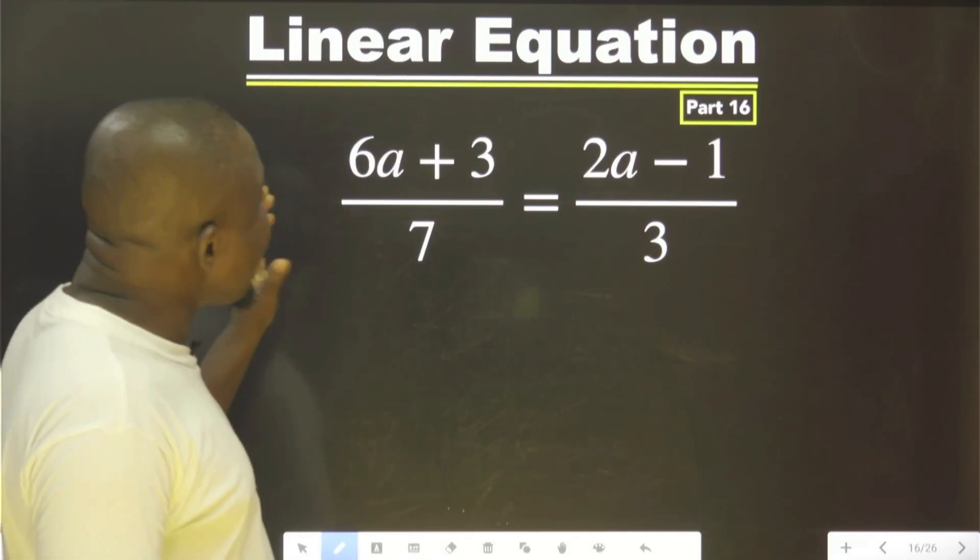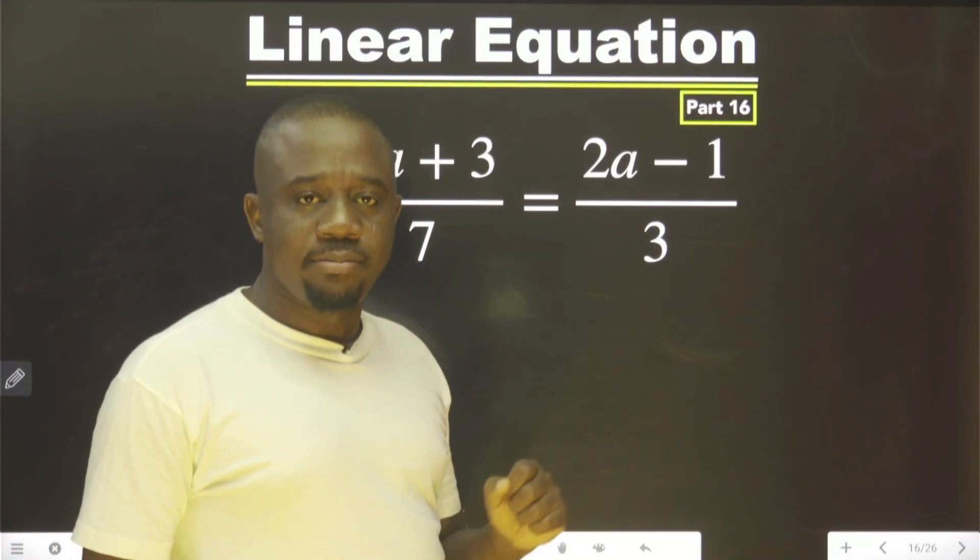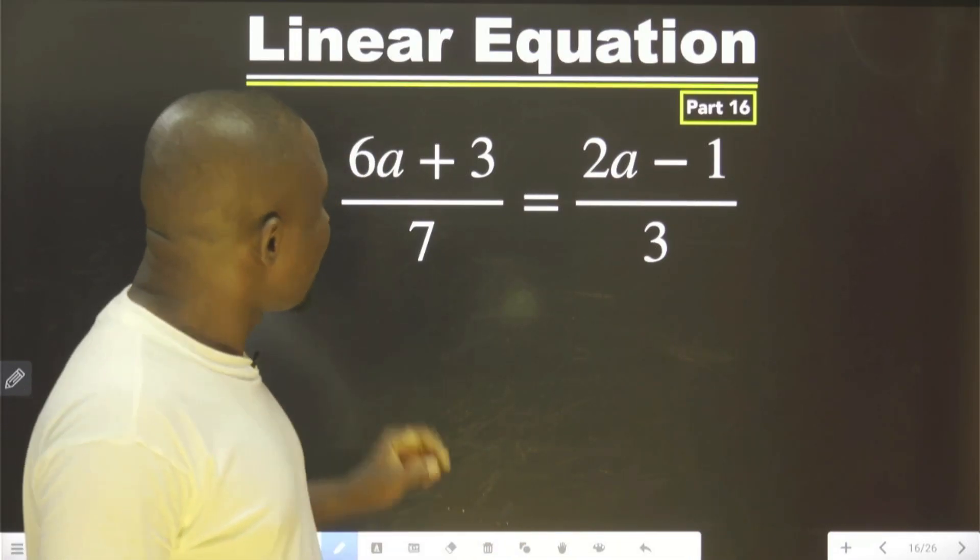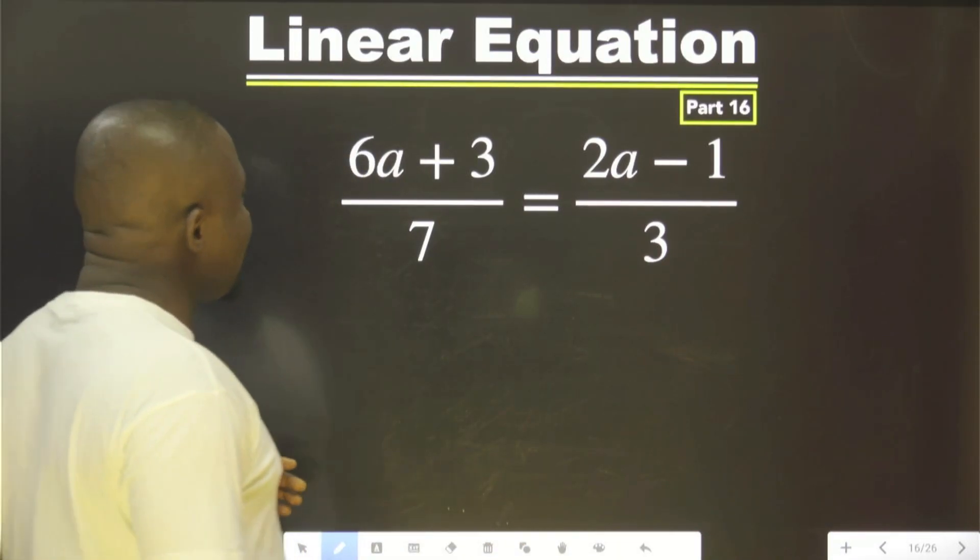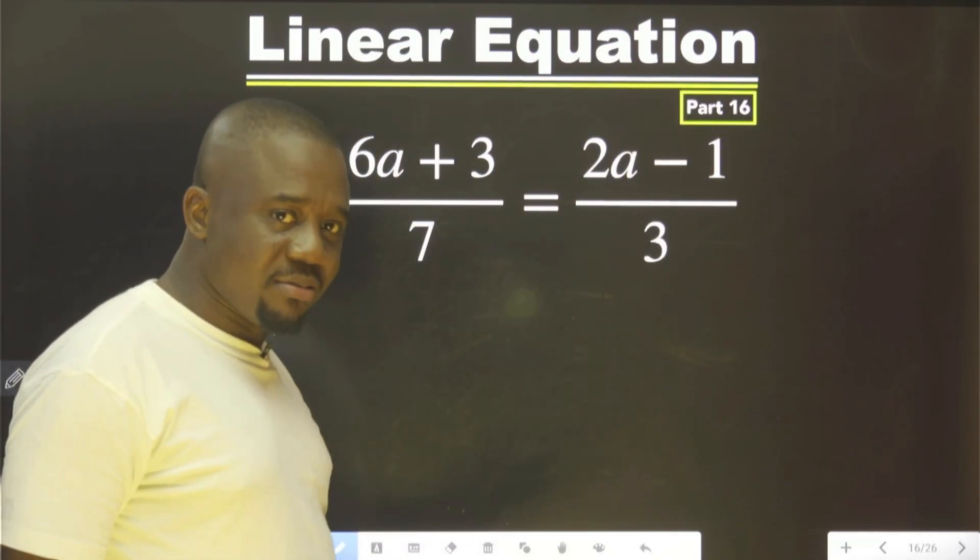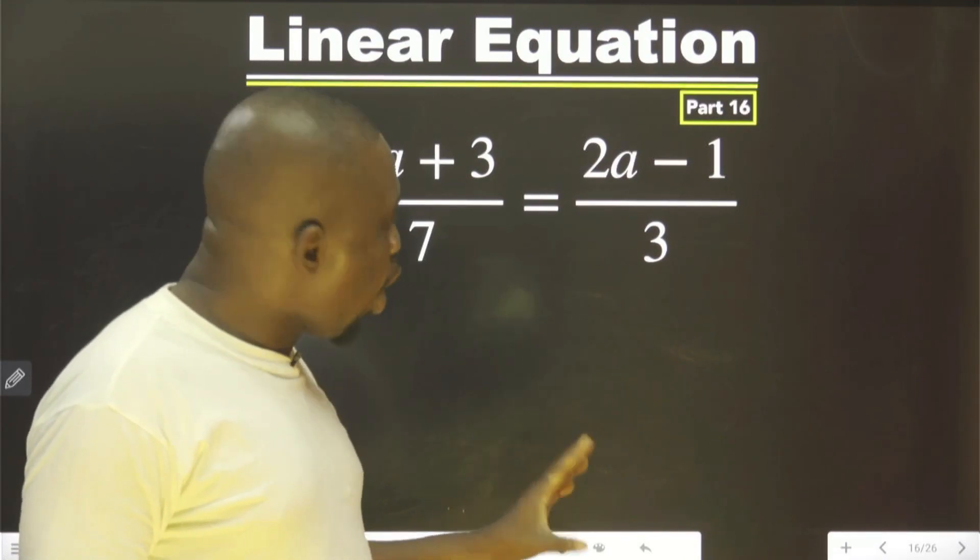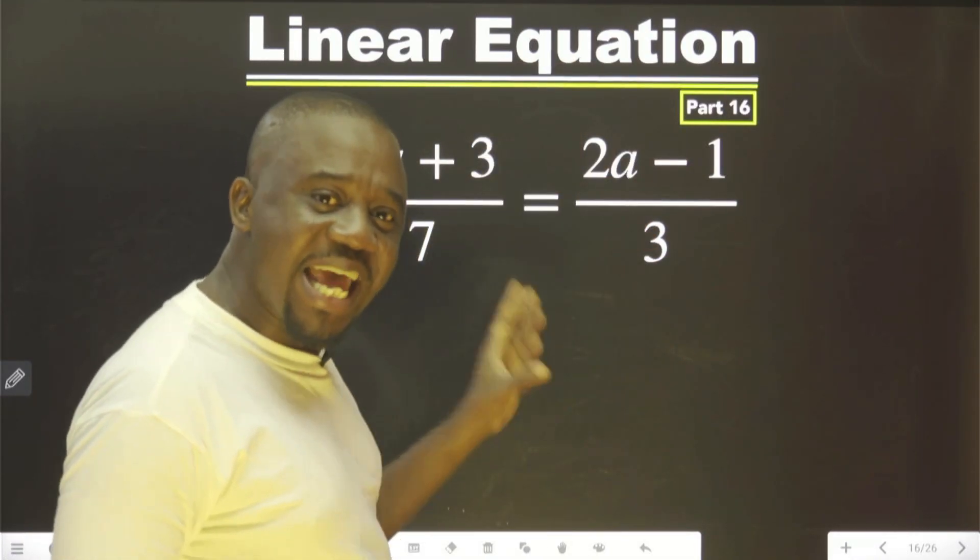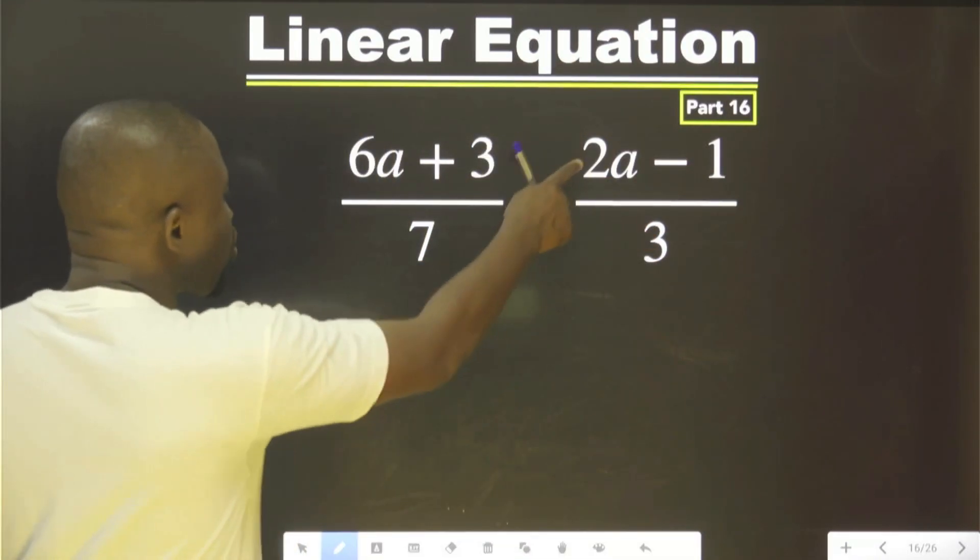As you can see in this place, we need to find A. But unfortunately, this is on this side, this is on the other side. The only way to do this is to cross multiply, or you bring this to this side and find the LCM. Let's just cross multiply.